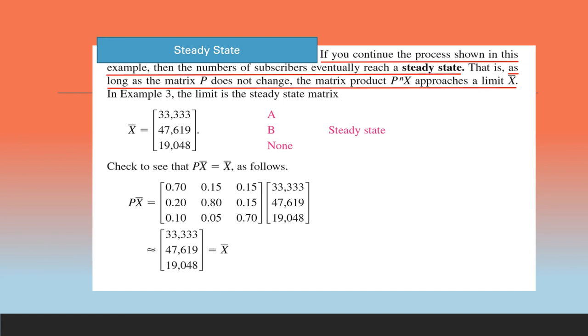And we take that as X bar: 33,333 in A, 47,619 in B and 19,048 in no cable TV.